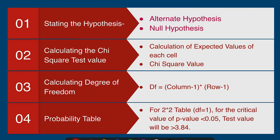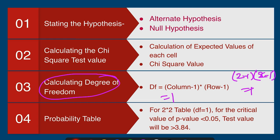The third step is calculating the degree of freedom. Degree of freedom is given by (columns minus 1) times (rows minus 1). We have two columns, so it is 2 minus 1 times 2 minus 1, which equals 1 times 1, equal to 1. So the degree of freedom for a 2x2 table is 1.